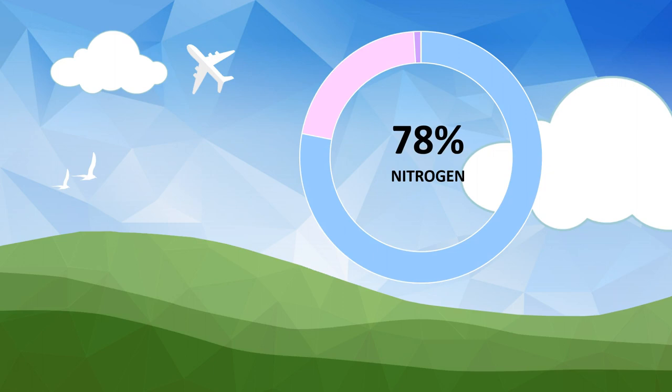Nitrogen is the most abundant element in our planet's atmosphere. Approximately 78% of the atmosphere is made up of nitrogen gas. Other compositions of the atmosphere are 21% oxygen, 0.93% argon, and 0.04% carbon dioxide. Gases like carbon dioxide, nitrous oxides, methane, and ozone are trace gases that account for about a tenth of one percent of the atmosphere.